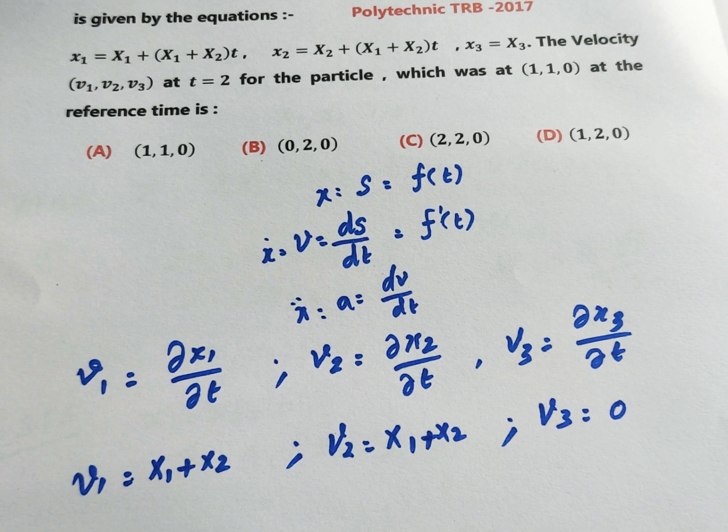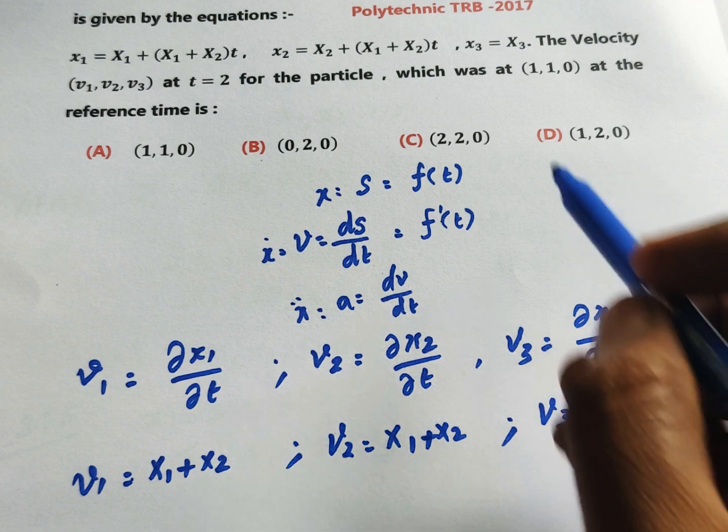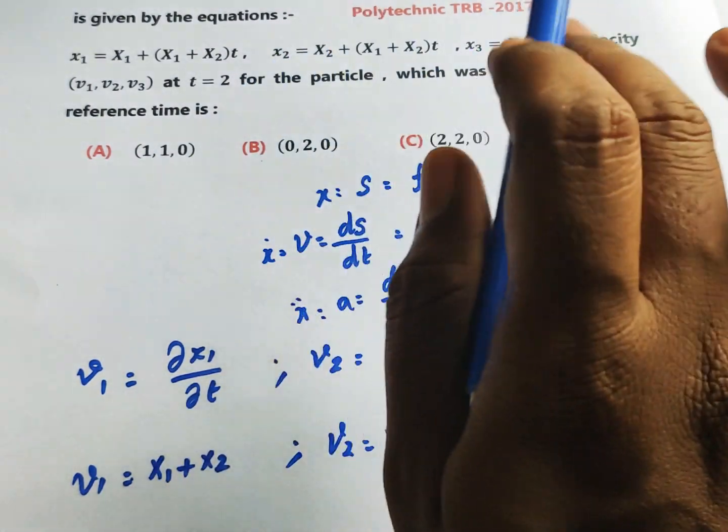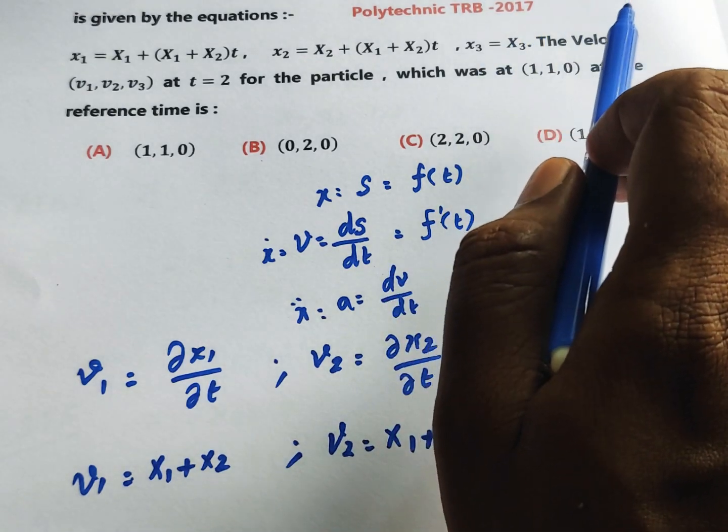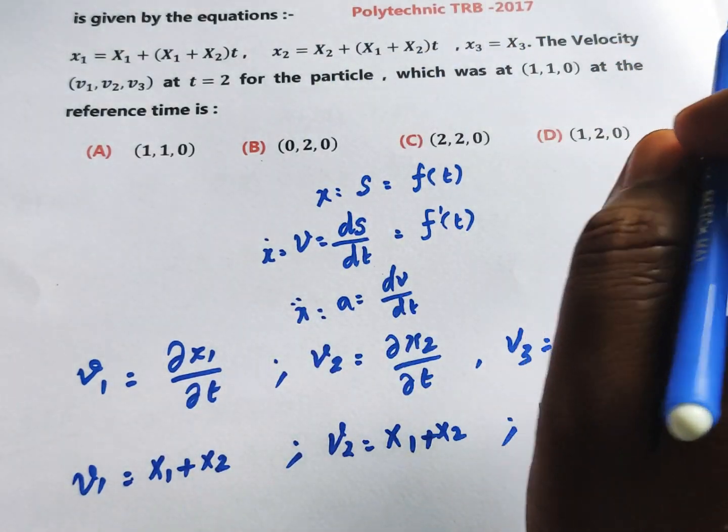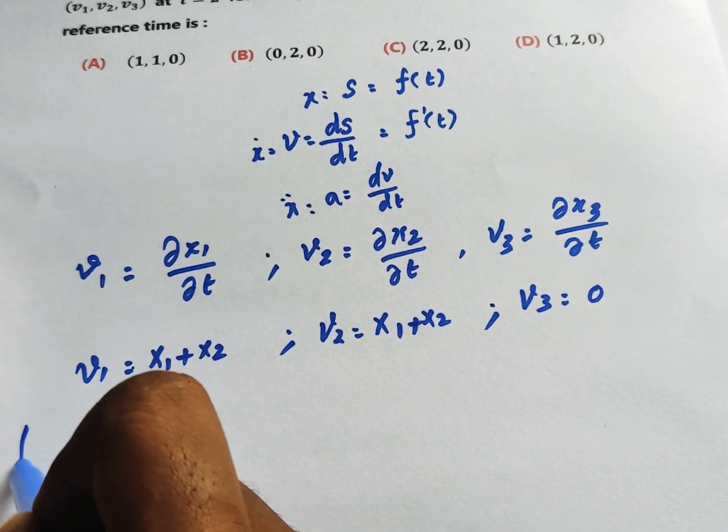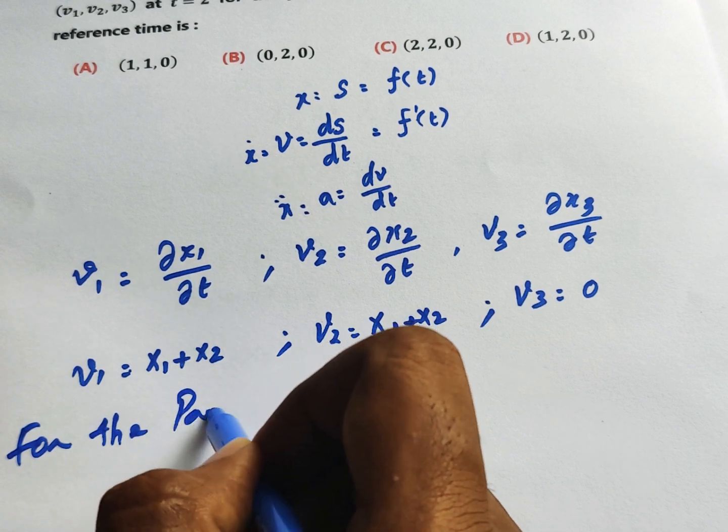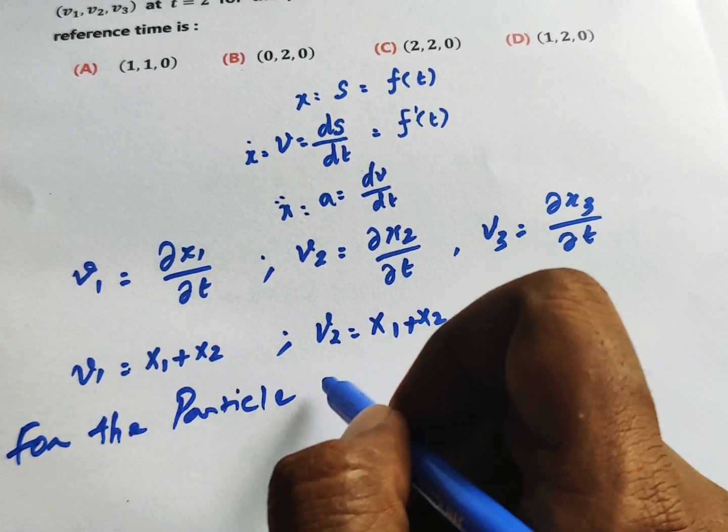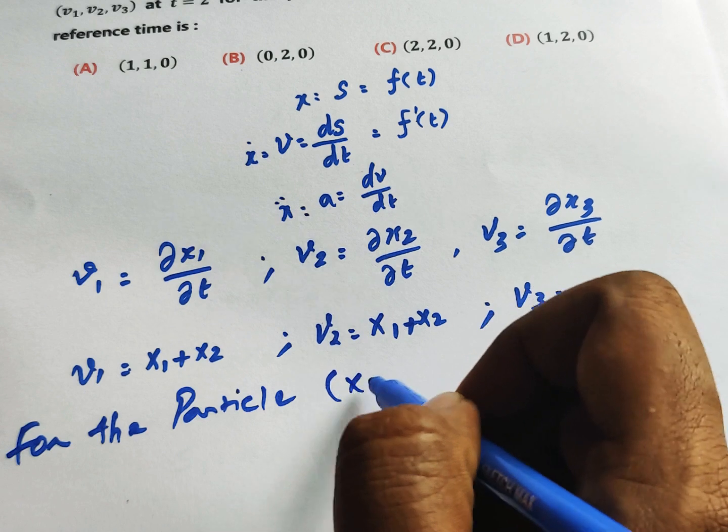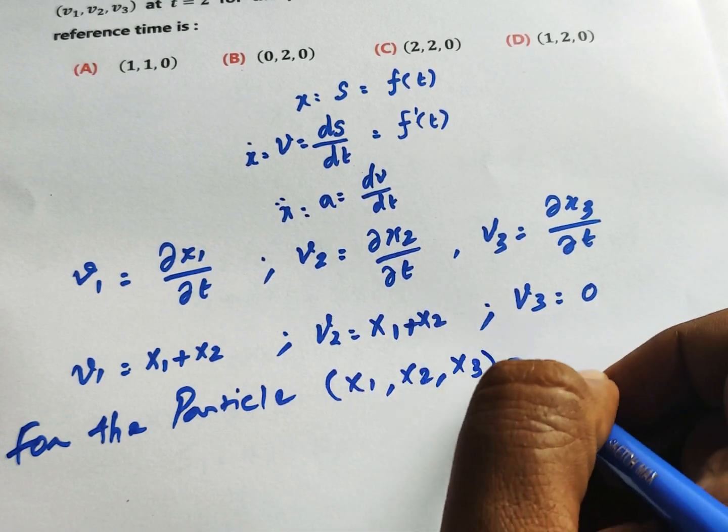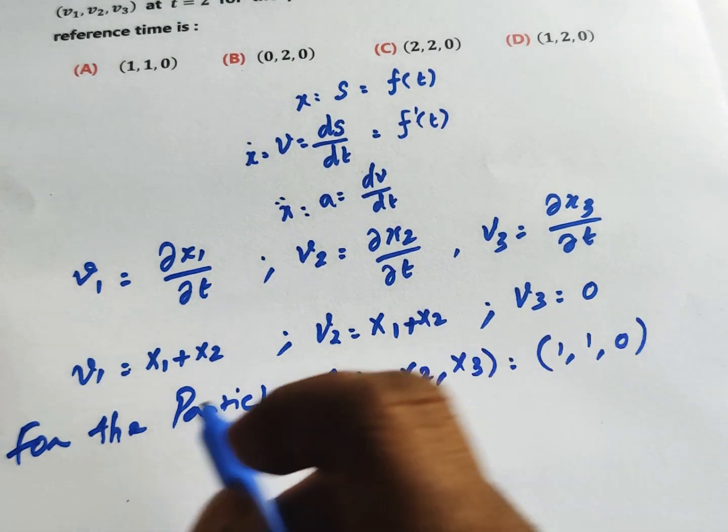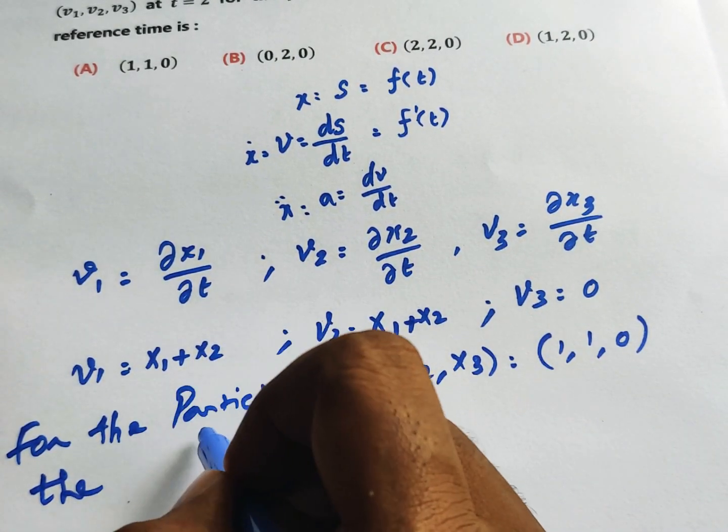For the particle at position (1,1,0) at reference time, we have X1 = 1, X2 = 1, X3 = 0. We need to find the velocity at t = 2.